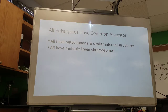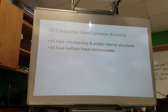There's also evidence that all eukaryotes share a common ancestor — the similarities in our mitochondria and our similarly organized internal structures are evidence of that, as is the fact that we have multiple linear chromosomes. Our mitochondria are similar enough that they probably came from the same ancestral prokaryote that was engulfed and ended up living in an endosymbiotic relationship within the cell.